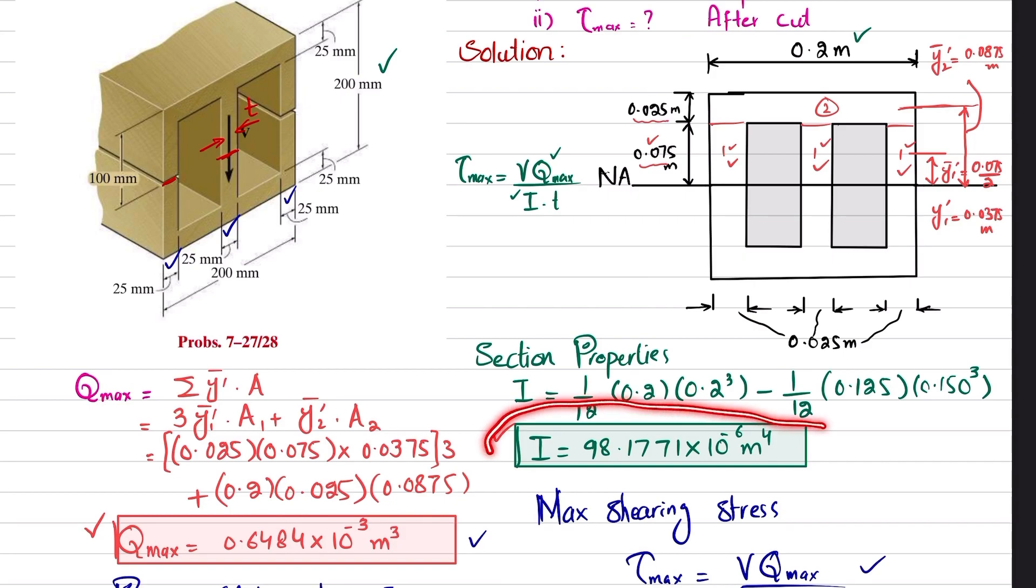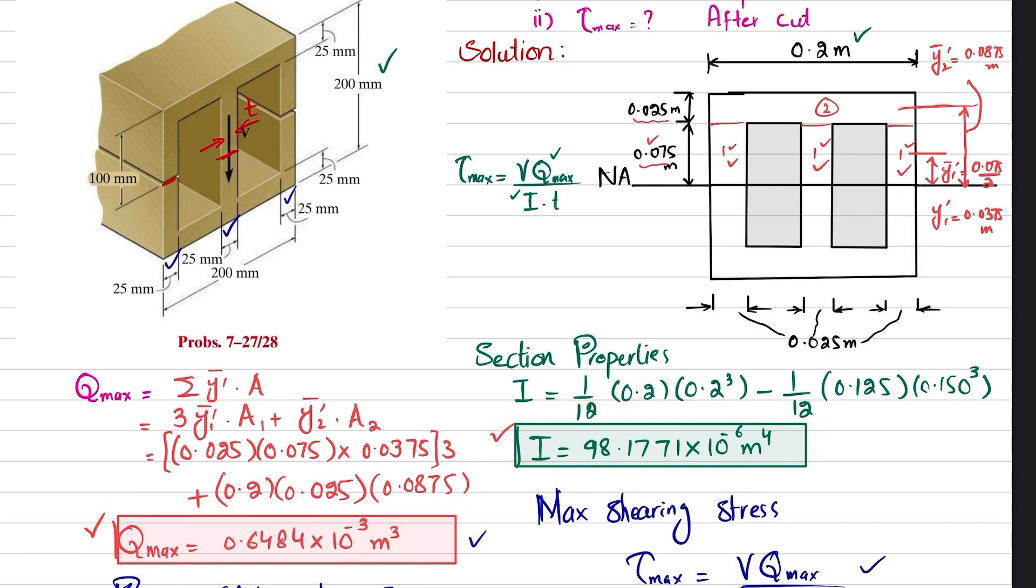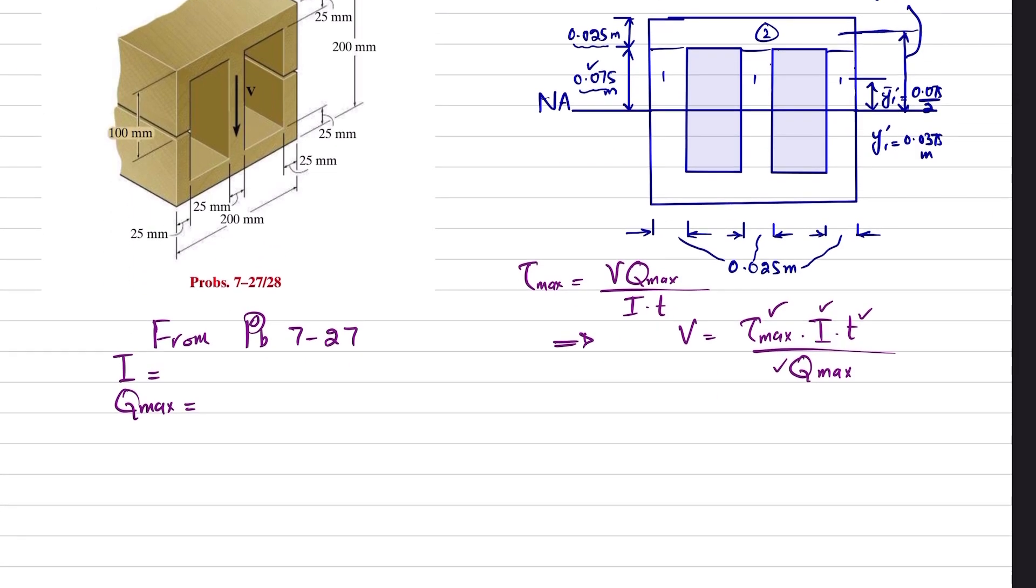This was the moment of inertia and this was Q_max. We will pick these two values and write them over here. So I was 98.177 × 10^-6 m^4, and Q_max was 0.64843 × 10^-3 m^3.